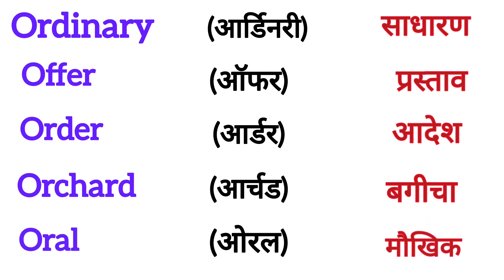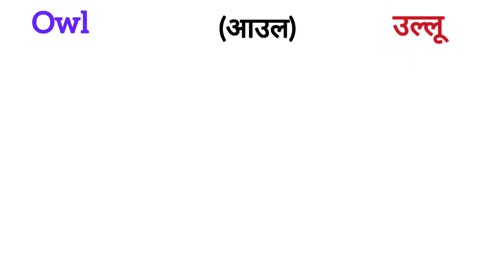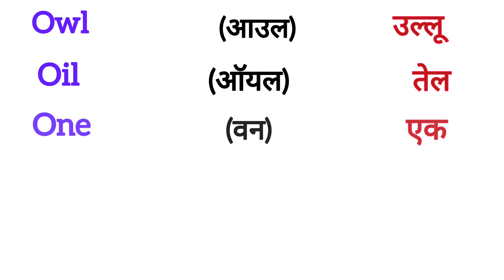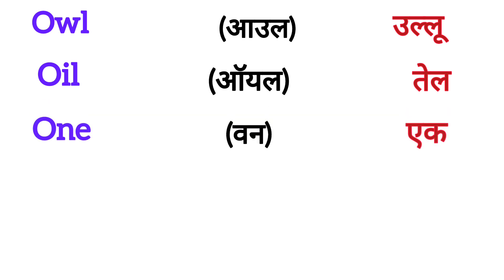Next word is ORAL. ORAL means MOKHIK. Next is OWL. OWL means ULLU. Next word is OIL. OIL means TEL. Next is ONE. ONE means EK.